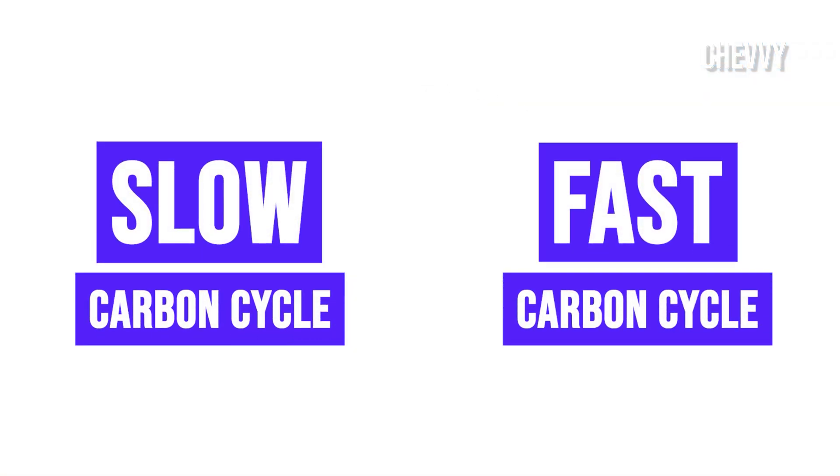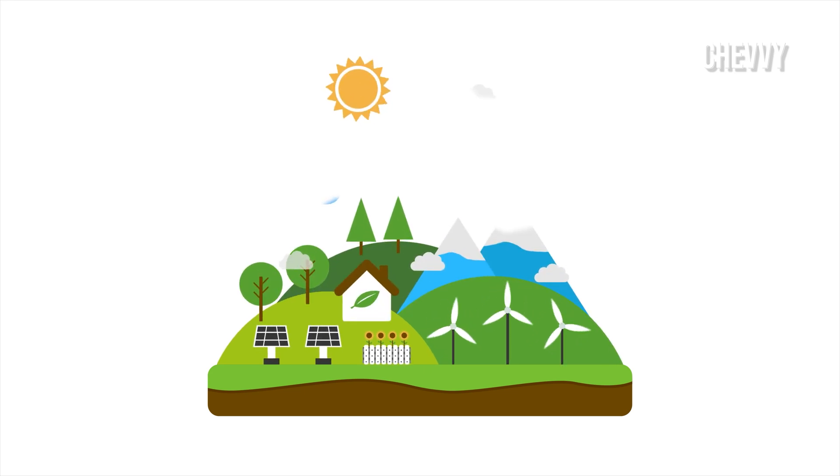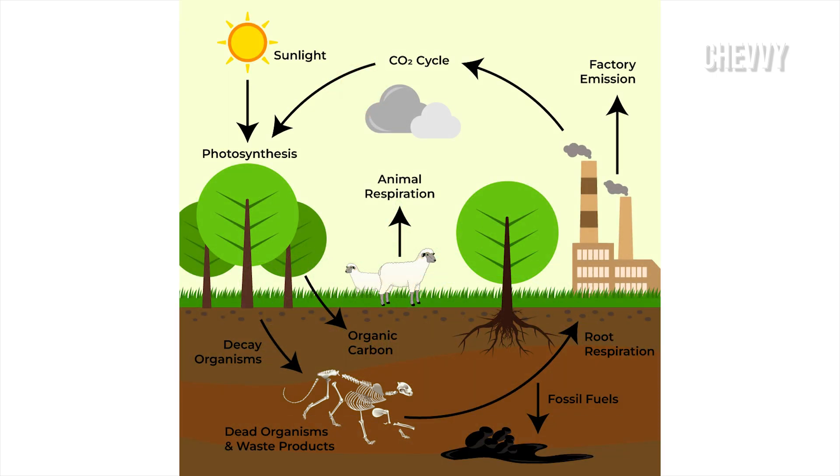The carbon cycle can be classified into slow and fast carbon cycle based on the time taken to complete one cycle. Through a series of chemical reactions and tectonic activity, carbon takes between 100 to 200 million years to move between the reservoirs. This series takes place in the slow carbon cycle.